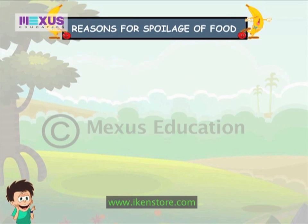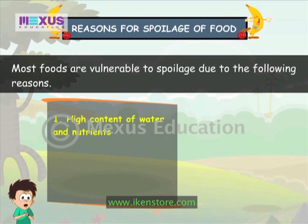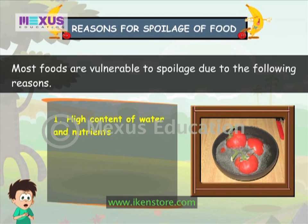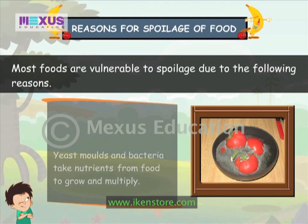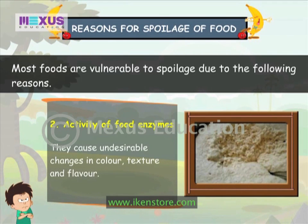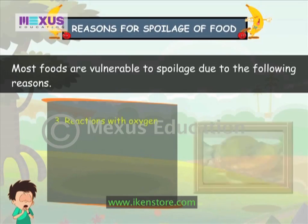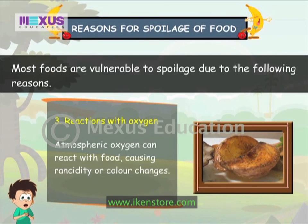Reasons for spoilage of food: Most foods are vulnerable to spoilage due to high content of water and nutrients — yeast, moulds and bacteria take nutrients from food to grow and multiply. Activity of food enzymes causes undesirable changes in colour, texture and flavour. Reactions with oxygen: atmospheric oxygen can react with food causing rancidity or colour changes.